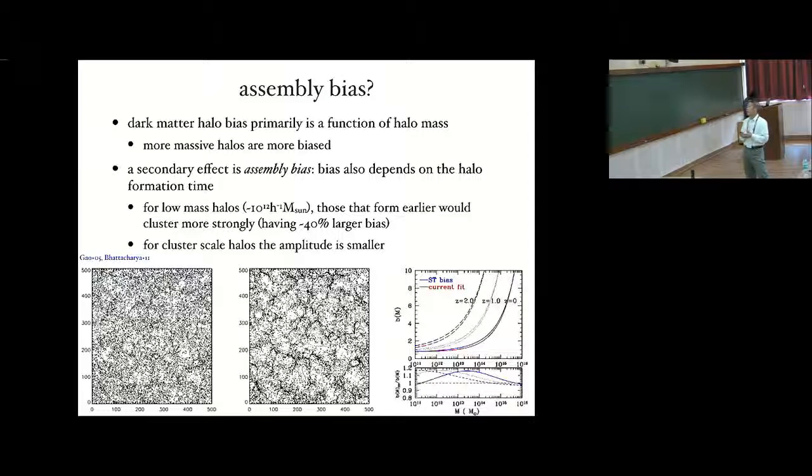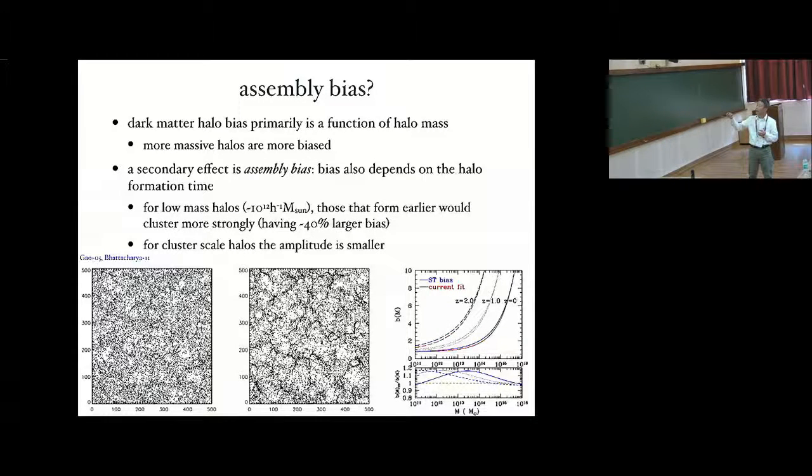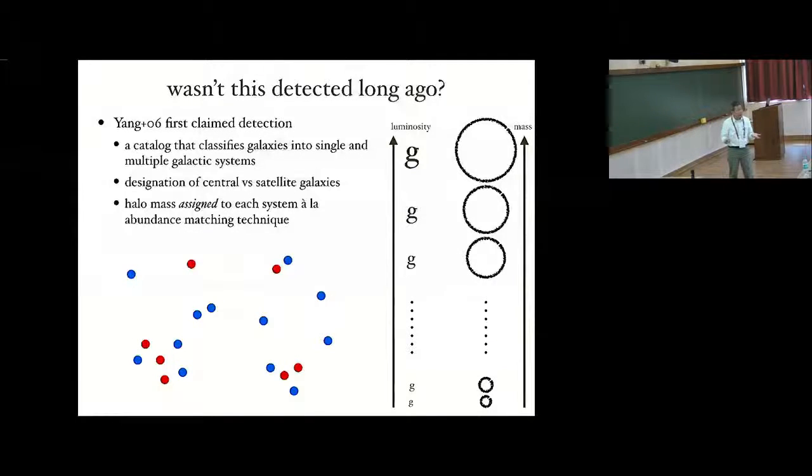What is assembly bias? We know that dark matter halo bias is primarily a function of halo mass. It's low at low mass end, but becomes high quickly at high mass end. With the advent of large simulations like Millennium, it was discovered that bias also depends on other halo properties like formation time. And this is known as assembly bias. This shows the spatial distribution of halos with 10 to 11 solar masses. But this shows the distribution for the youngest 20%, and this is the oldest 20%. So you see that their clustering properties are very different. So for such low mass halos, those that form earlier would cluster more strongly with about 40% larger bias than the later forming ones. And for cluster scale halos, the amplitude is expected to be smaller.